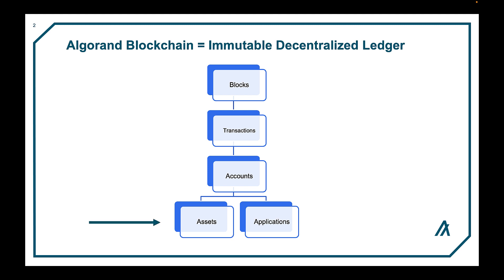An asset, in general, is an item of value that can be exchanged, used as a form of payment, or held as an investment. In the context of Algorand, an asset is a digital representation of an item of value that can be transferred and stored on the Algorand blockchain.